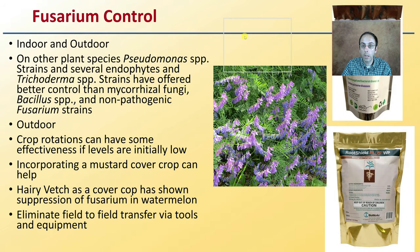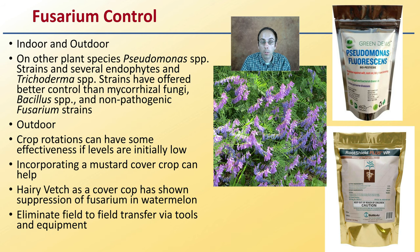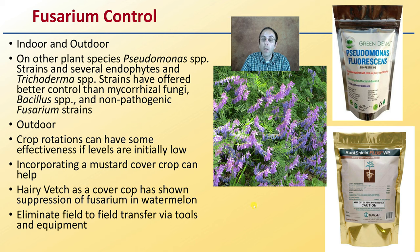So how do you go about controlling it? For both indoor and outdoor applications, looking at other plant species, Pseudomonas strains and endophytes such as Trichoderma strains have offered better control than mycorrhizae fungi, Bacillus, and non-pathogenic fusarium strains. So Pseudomonas or Trichoderma might be worth investigating as biological controls. There are products available containing Trichoderma species, though for large-scale outdoor cannabis growing they may not be as advantageous.